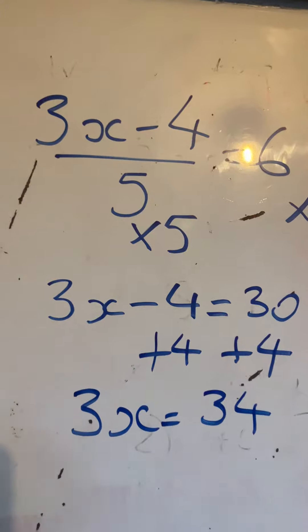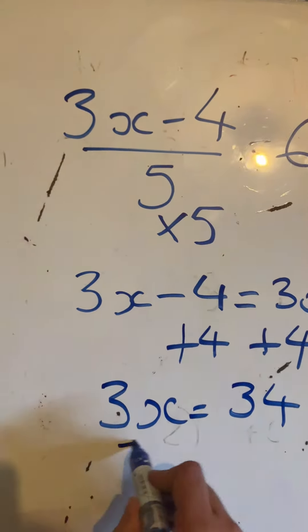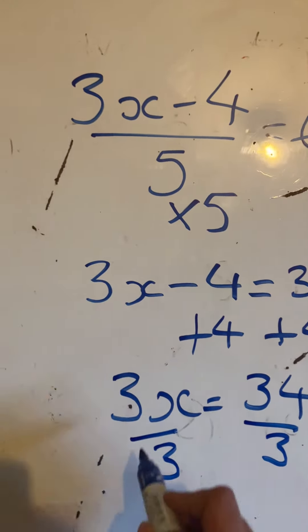3x means 3 times x, so the opposite will be to divide both sides by 3. So dividing both sides by 3, we're going to get 3x thirds is equal to 34 thirds.